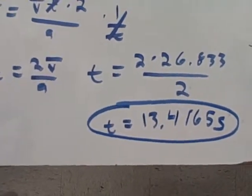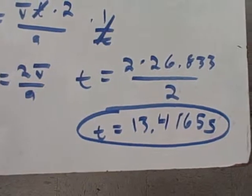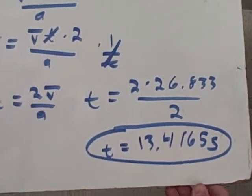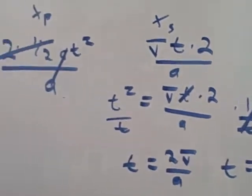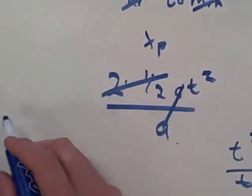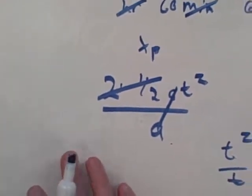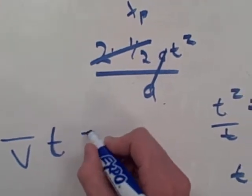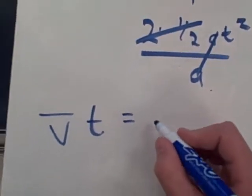And for part b, all you have to do is plug in the time for a. Plug in the time for the one half acceleration time squared, or plug it in for velocity times time to get your distance.